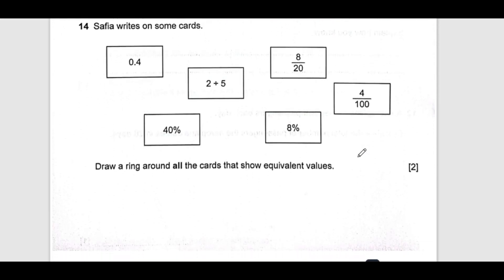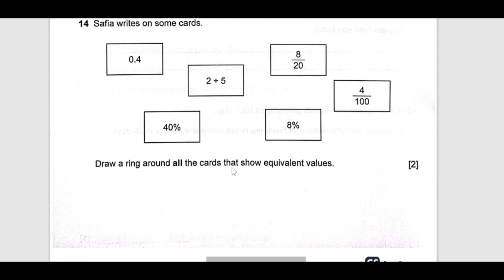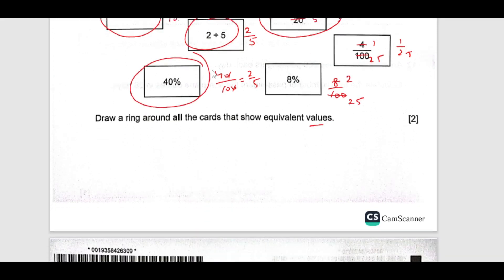Then number 14 we have here, Sophia writes some cards, draw a ring around all the cards that show equivalent value. We can write it down, this is 4 over 10 which is equivalent to 2 over 5. This is already 2 over 5 and this if you cancel 2, 4 times 2 and this is also 2 over 5. This is 1 over 25. This is 8 over 100, 4 times 2, and then this is 40 over 100 which is 2 over 5. Which are 2 over 5 here? We have this one, we have this here, we have this here and also this one. Put rings around all these numbers.